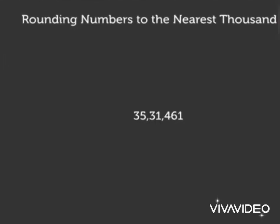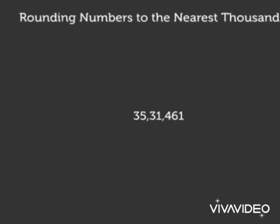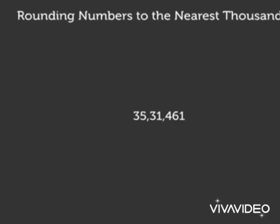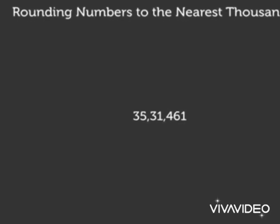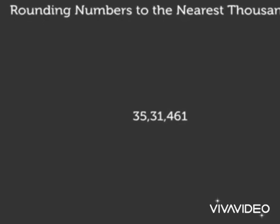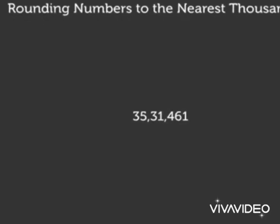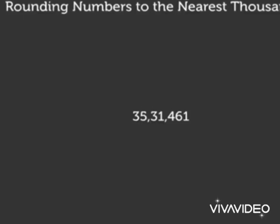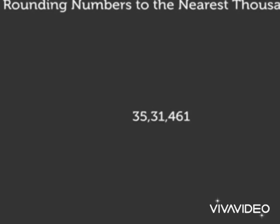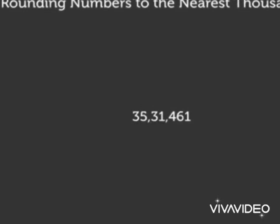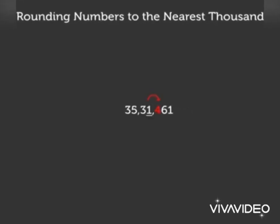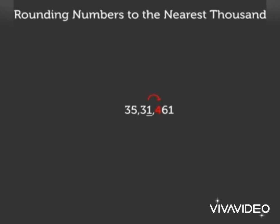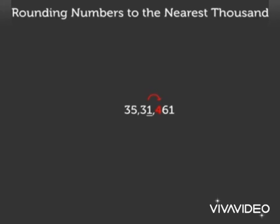The next example is 35,31,461. Again, we have to do the same. Look at the digit to the right of the thousand place — it is 4.